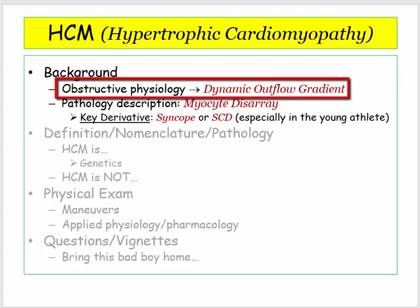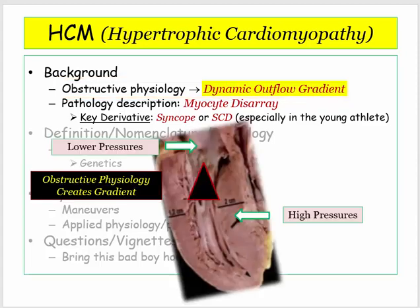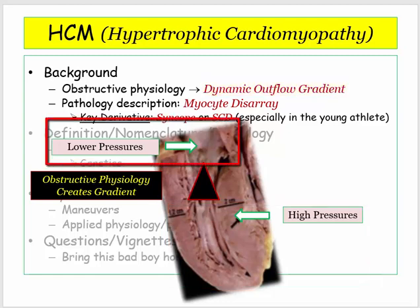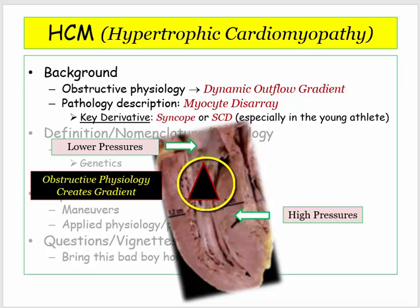It is useful to begin by considering the obstruction as a dynamic outflow gradient. The gradient refers to the pressure differences between the LV and those measured in the aorta. You can see in this image the relative changes in pressures generated by the stenotic lesion that is the physiologic hallmark of this disorder. I refer to this as a dynamic gradient to underscore it is not static — the intensity of the obstructive physiology will vary by a number of factors, especially those that impact the left ventricular end-diastolic volume.